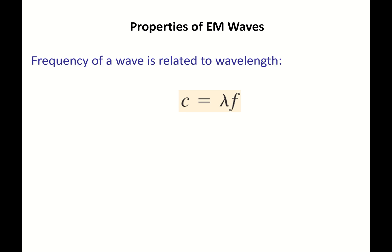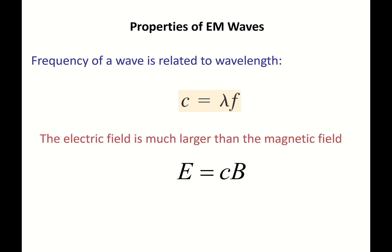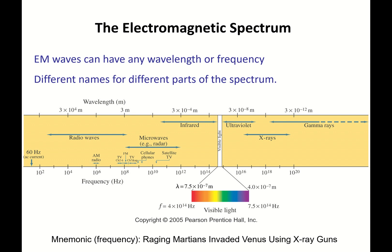The properties of electromagnetic waves: the speed c = 3×10⁸ m/s equals wavelength times frequency, so frequency and wavelength are related. Also, the electric field is much larger than the magnetic field — the electric field E equals the speed of light times B. Since c is about a third of a billion, the magnetic field is much smaller than the electric field.